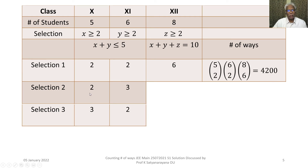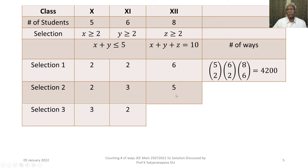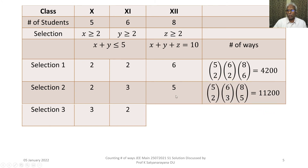For Selection 2, having selected 2 students from class 10 and 3 students from class 11, already 5 students are selected, so the remaining 5 students come from class 12. By the product rule, the number of ways is 5C2 × 6C3 × 8C5, which equals 11200.